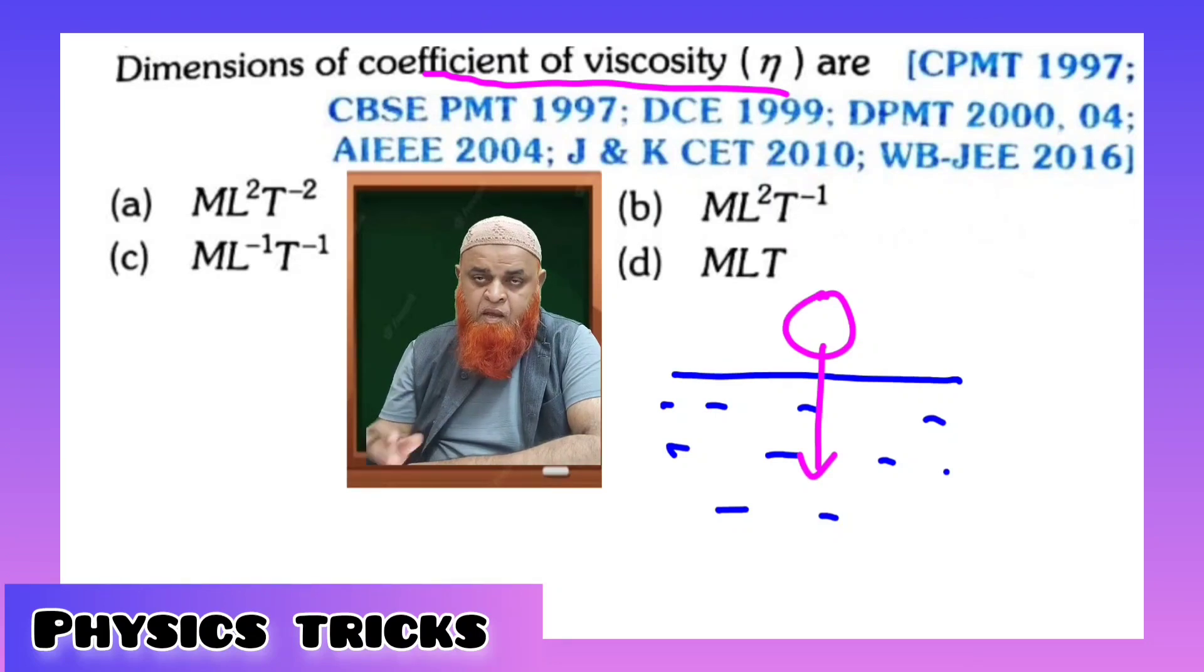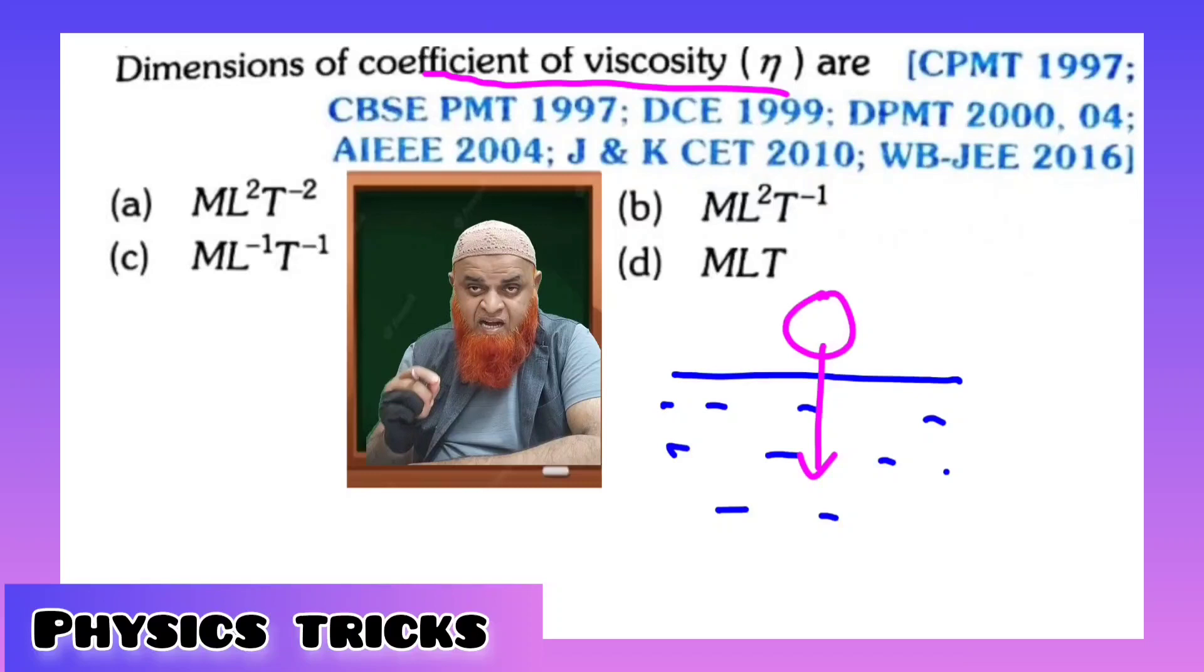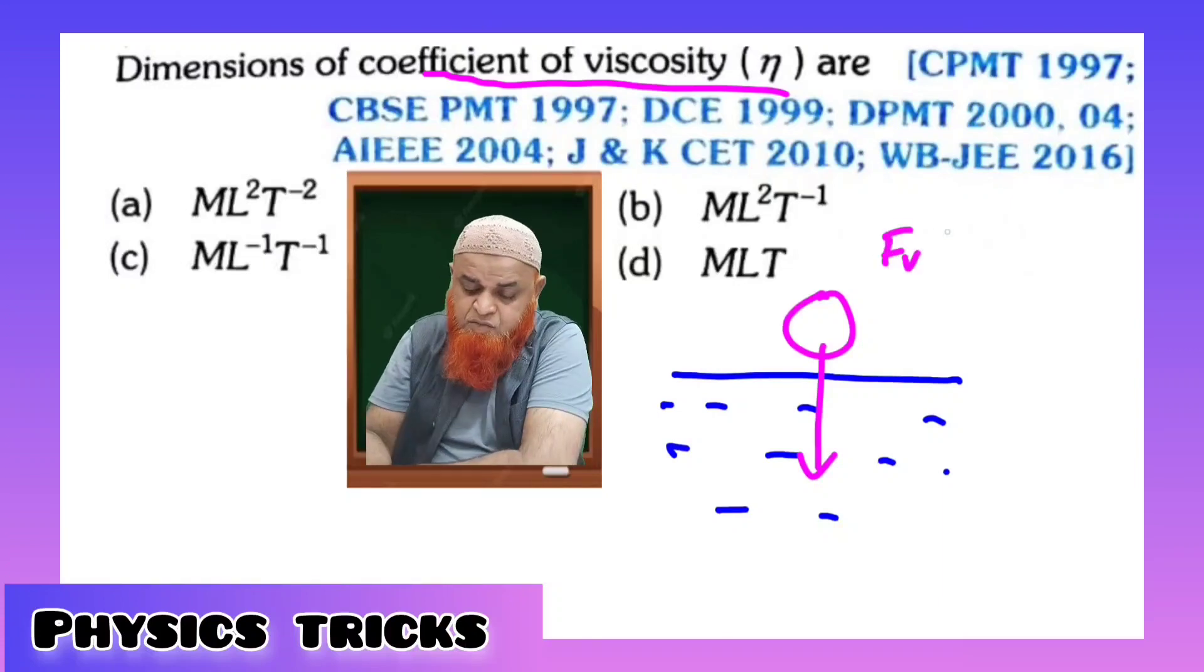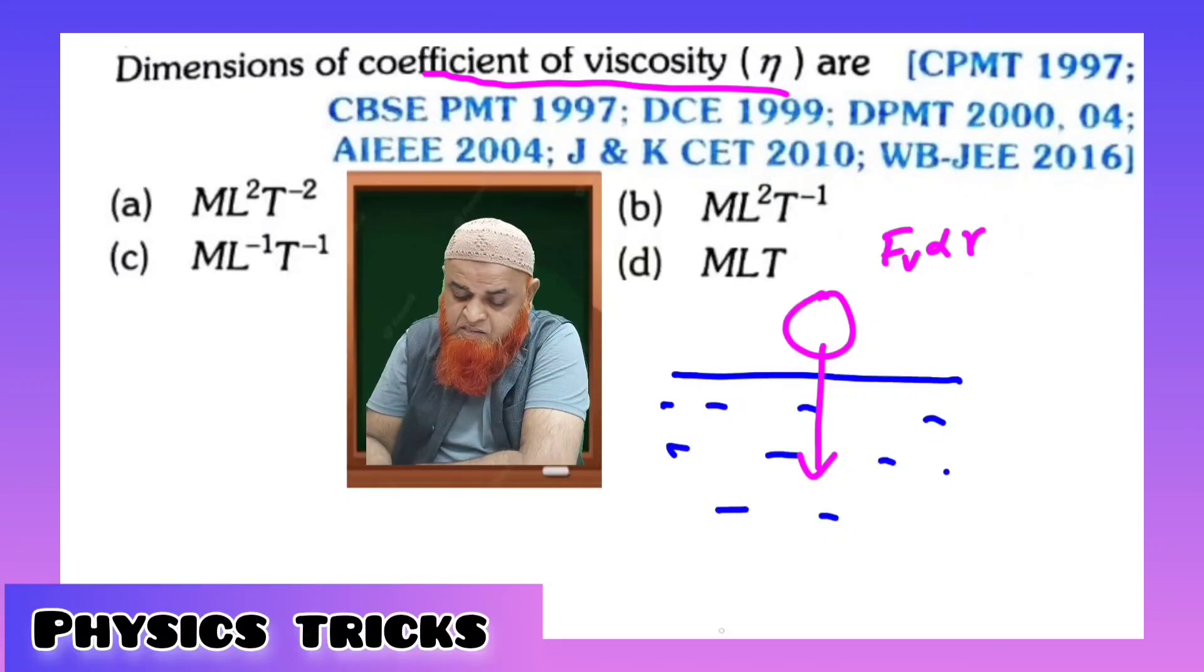There is a type of viscous force acting on that iron ball, so it falls down. Viscous forces are acting on the iron ball upwards, and this viscous force is directly proportional to the radius of the ball.